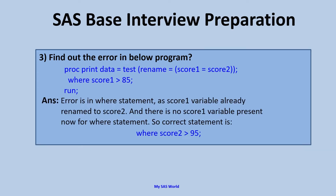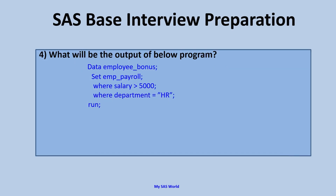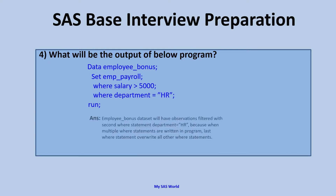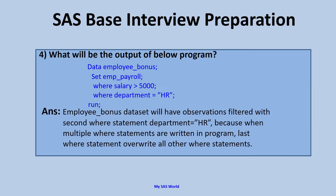Let's move on to the fourth question: What will be the output of the below program? DATA EMPLOYEE_BONUS; SET EMPLOYEE_PAYROLL; WHERE SALARY > 5000; WHERE DEPARTMENT = 'HR'. This one is a little bit tricky. The answer is: if we use multiple WHERE statements, the second WHERE statement takes priority and the first WHERE statement is ignored. This way if we have 10 WHERE statements, the last one would apply. So the EMPLOYEE_BONUS dataset will be created based on the filter DEPARTMENT = 'HR'.